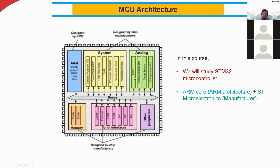We have the system block and the analog block for processing analog signals. We have memories to handle and store data and firmware programs. We also have interfaces because sometimes you want to use an Ethernet cable, sometimes a USB cable, or an RS-232 cable — nowadays the most common is the USB cable.